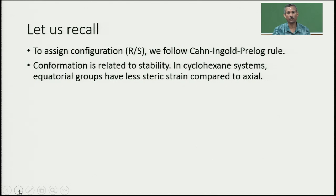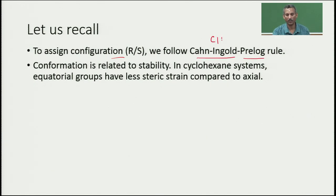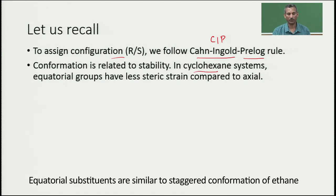Let us recall some things we have studied earlier. To assign R or S configuration, we follow the Cahn-Ingold-Prelog (CIP) rule. Conformation is basically related to stability — the least energy structure is the most stable. We will identify the most stable conformation for a given compound. In cyclohexane systems, equatorial groups have less steric strain compared to axial groups.